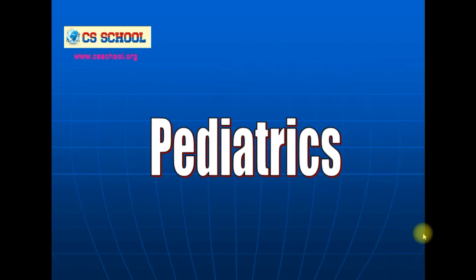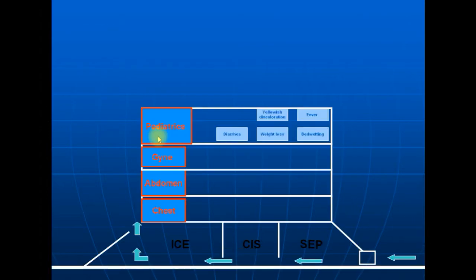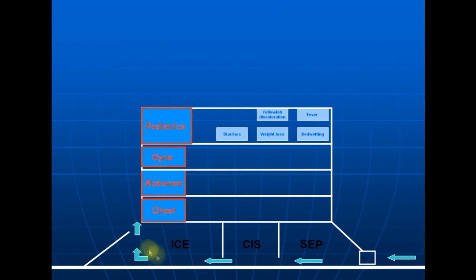Hello and welcome to the CS school. It's time for pediatrics. Pediatrics is the fourth level in the CS tower after chest, abdomen, and gynae. We assume that you watched the central concepts, so there is no need to speak again about the foundation and the design of the CS tower. Here are the expected cases that you may see in the pediatrics CS examination.